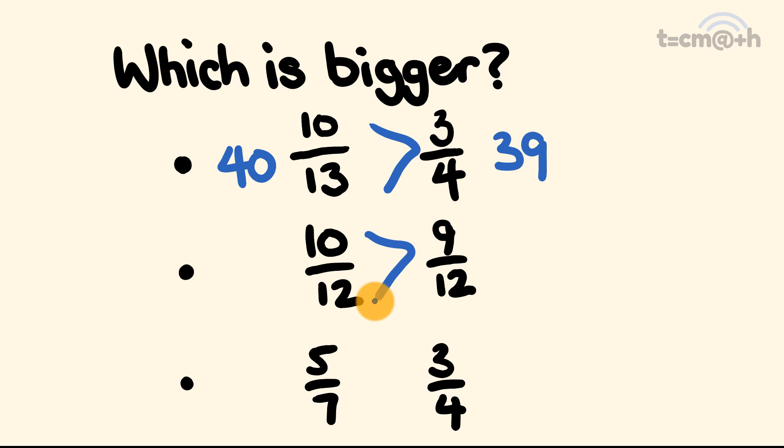But let's just do this to prove it. So 10 times 12 is 120, and 12 times 9 is 108. 120 is bigger than 108. So yeah, it worked.